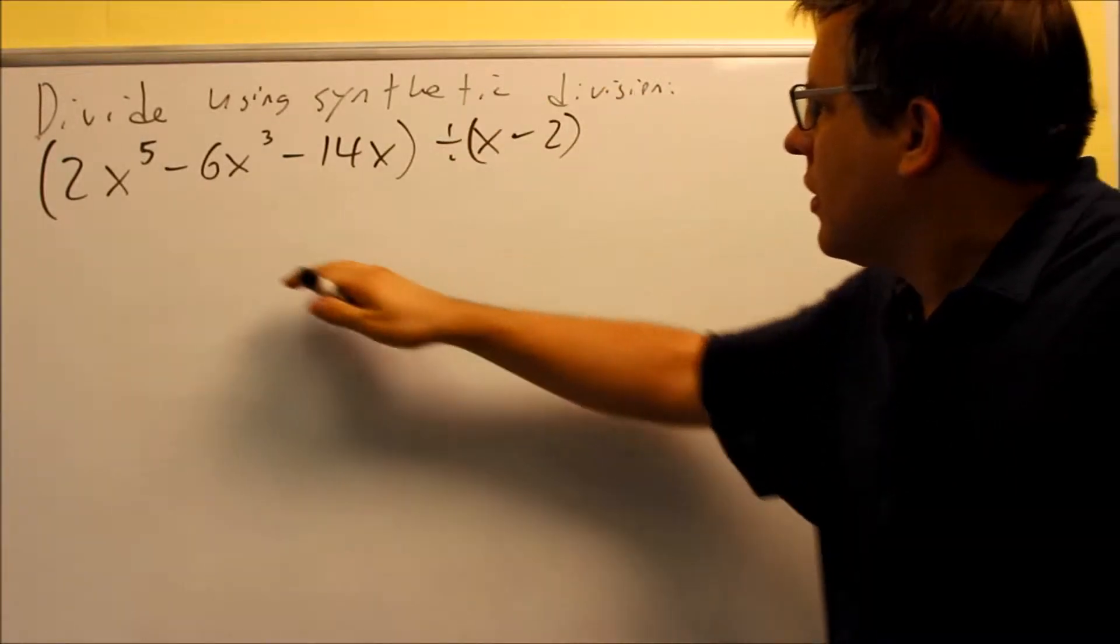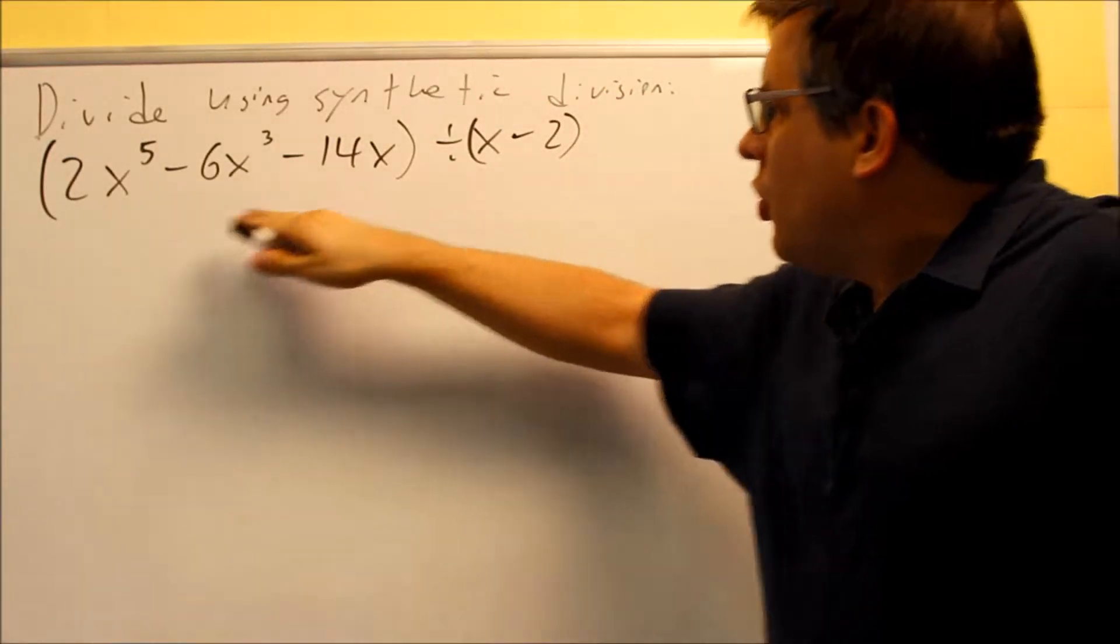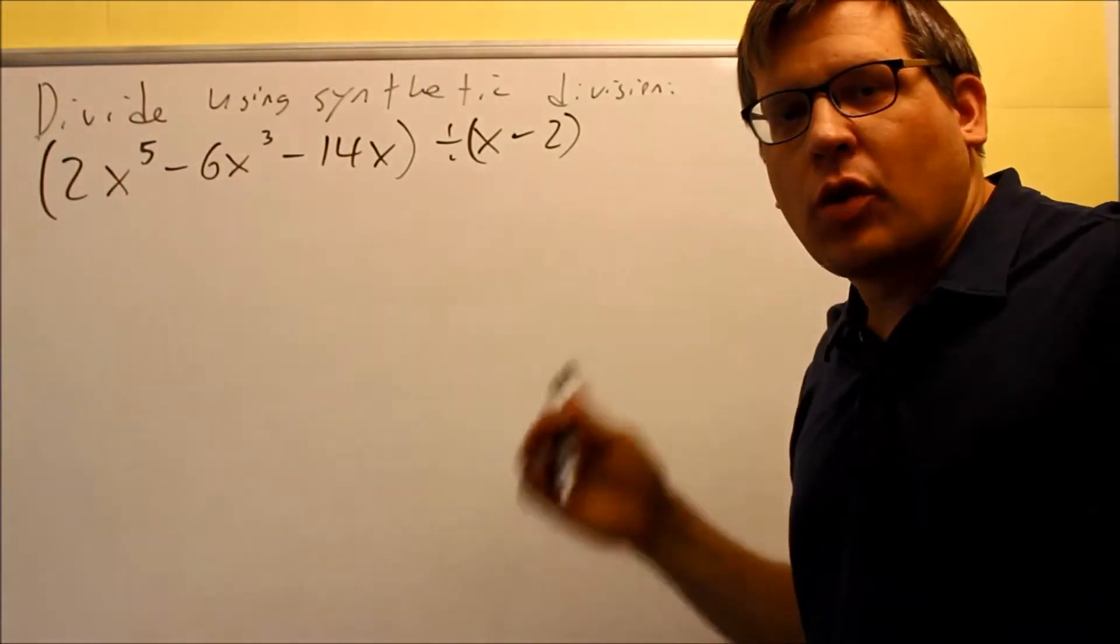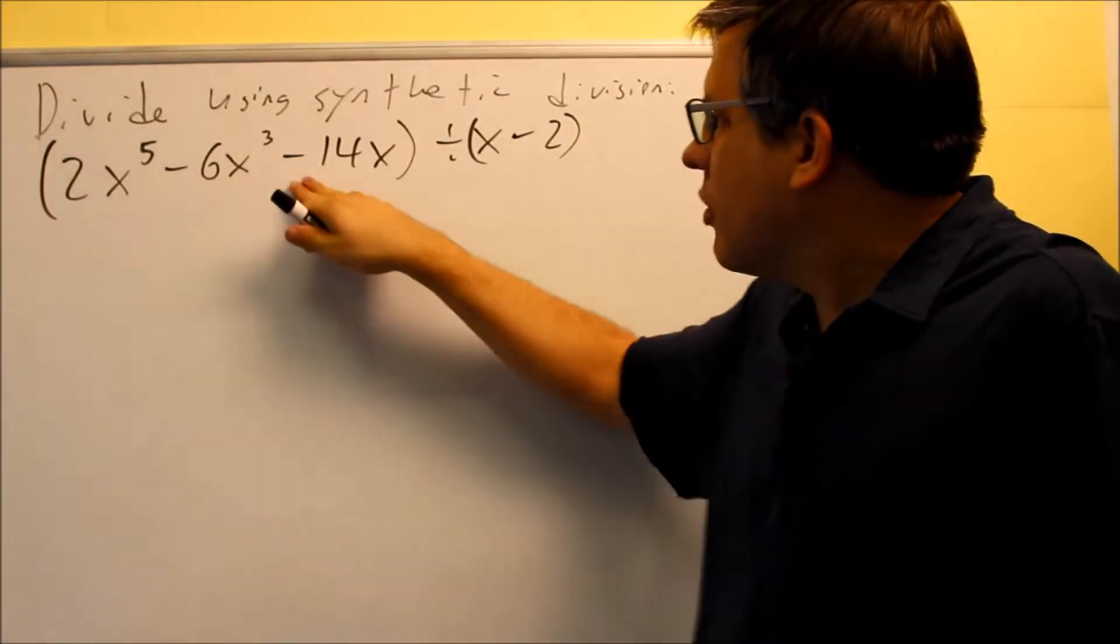Okay, we have another one with synthetic division. This one, we have a fifth power, a cube, and an x. So they are written with descending powers. However, again, we have a lot of terms that are missing here.